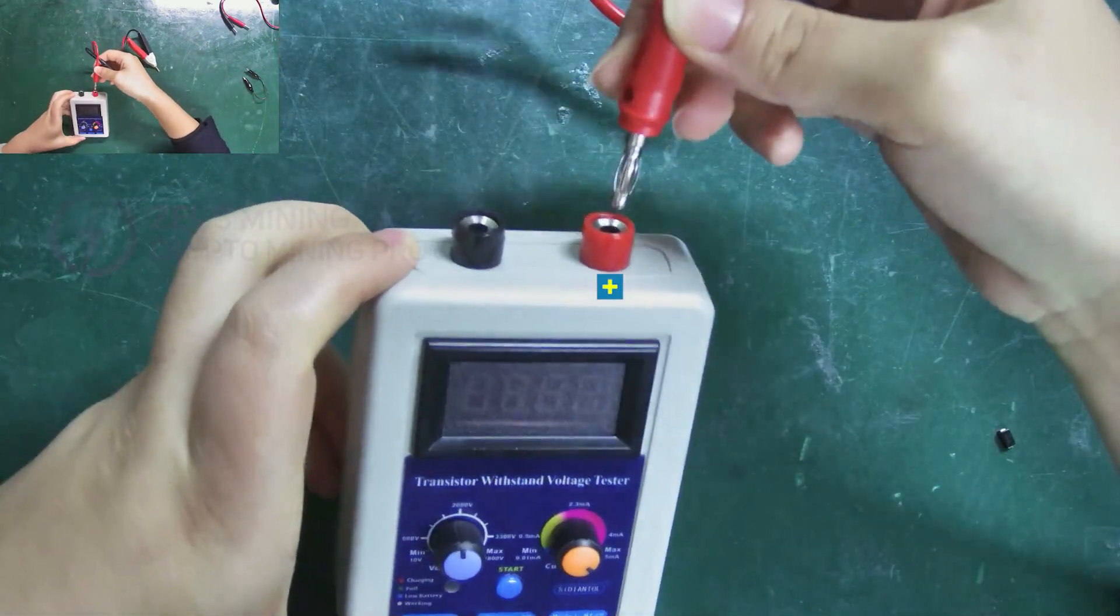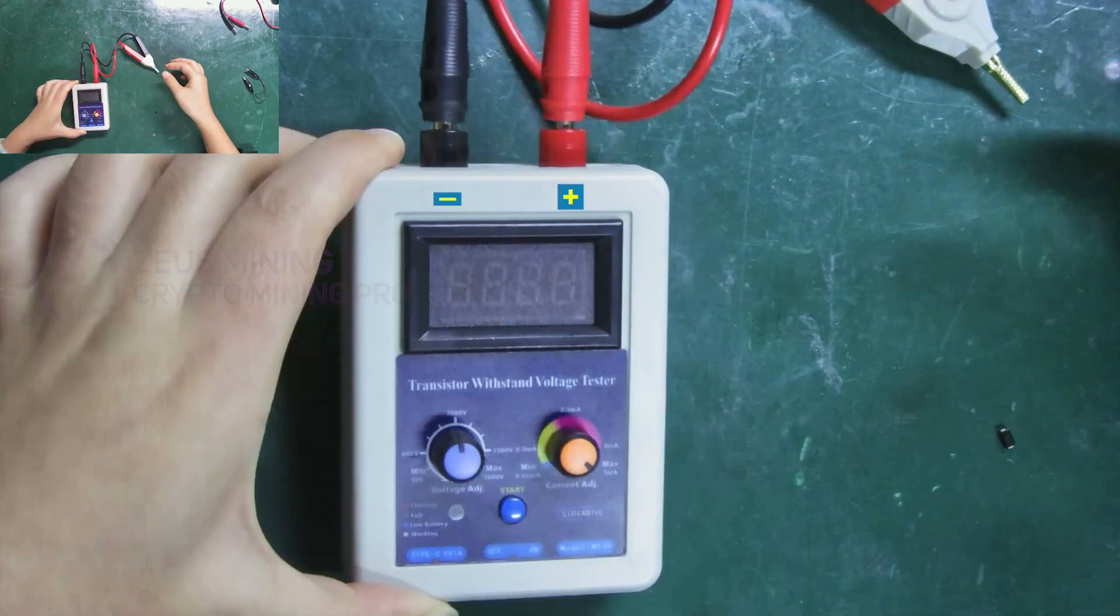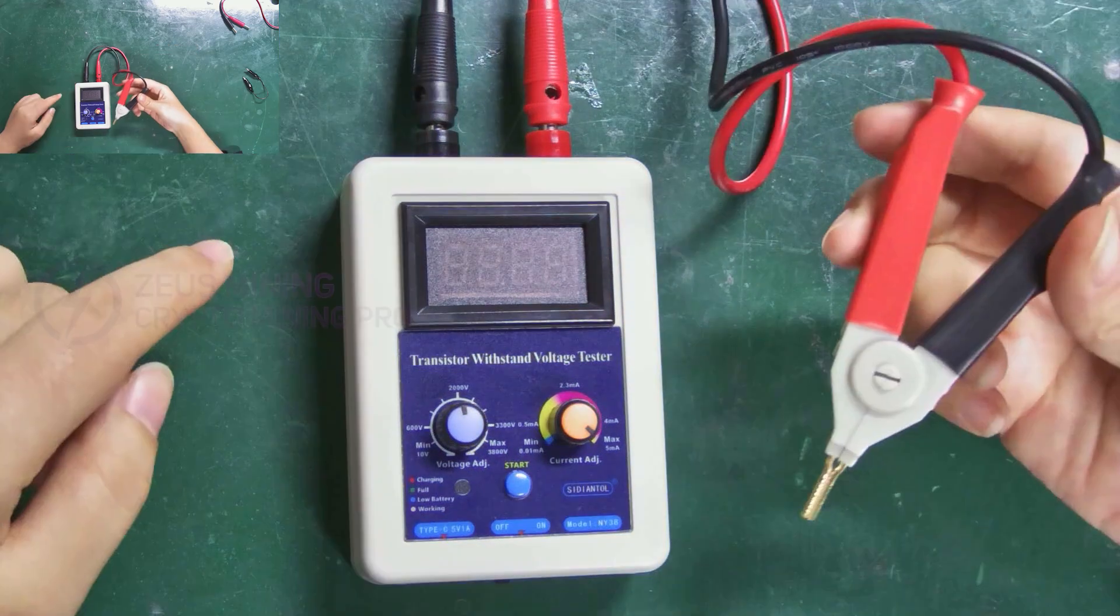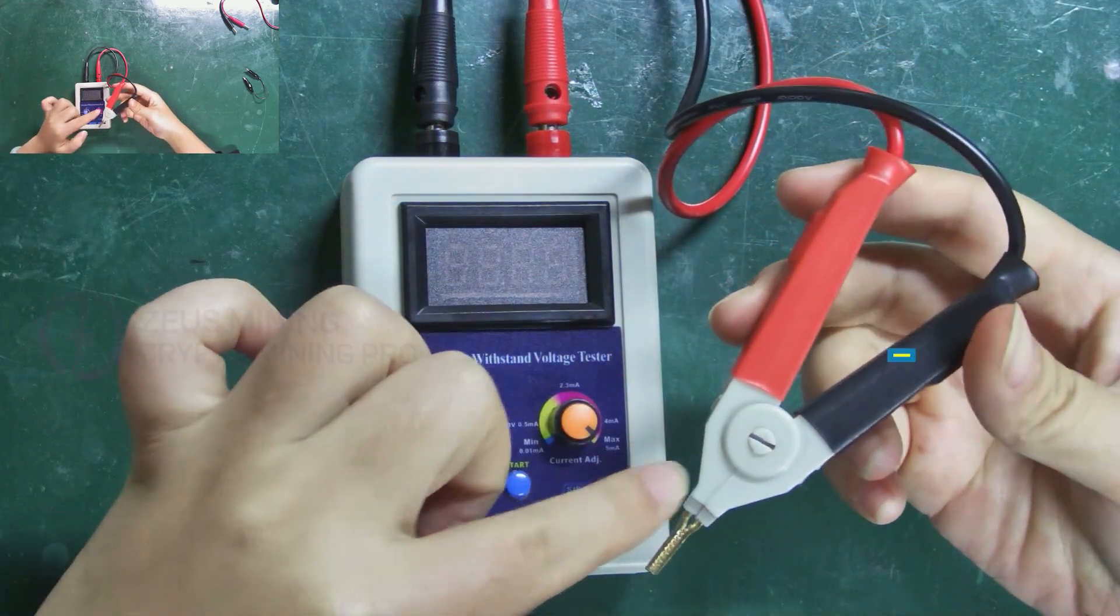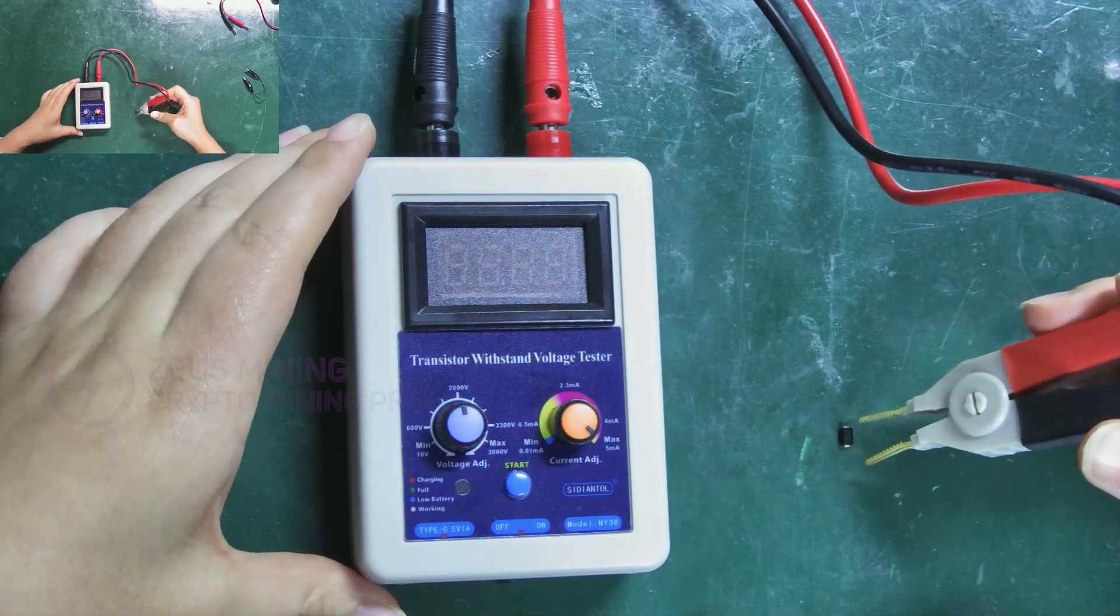The red cable is inserted into the positive output, and the black one is inserted into the negative output. The red side is its positive pole, and the black side is the negative pole. Clamp it as I demonstrated.